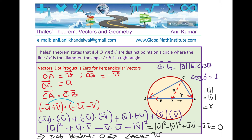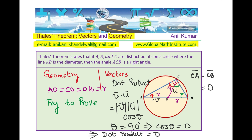So, what you have learned in this exercise is two different ways of proving Thales' Theorem — one using geometry with isosceles triangles and one using vectors with the dot product. I hope it makes sense. Feel free to write your comments and share your views. If you want to learn from me, you can send an email to the address given and we can have one-on-one Zoom classes. Thanks for your time and all the best.